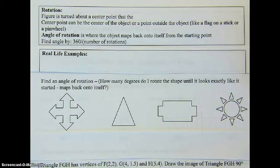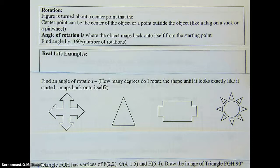Our next transformation is a rotation. Just like it sounds, it's a figure being turned around a point — and that point can be the center of the object or a point outside the object. Think of a little flag on a stick rotating around the edge like a pinwheel — that's how we perform a rotation.